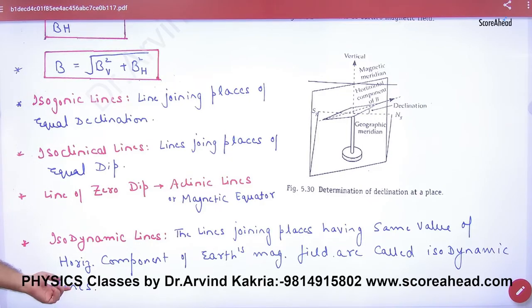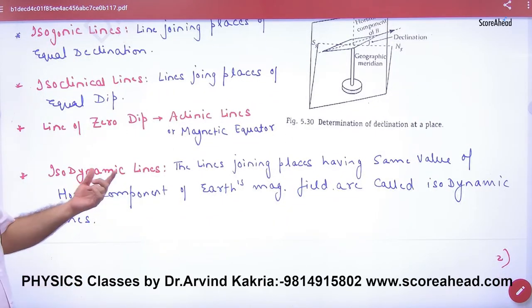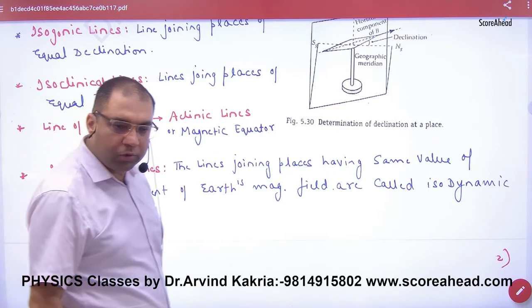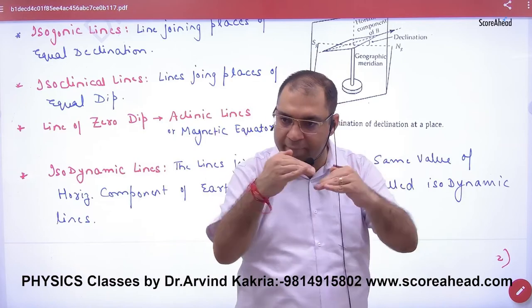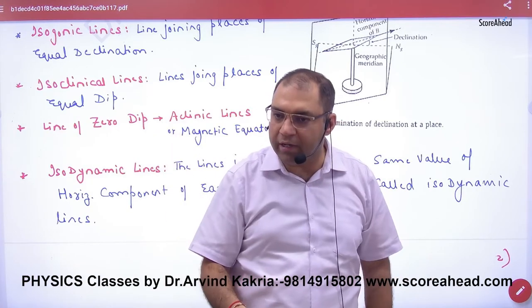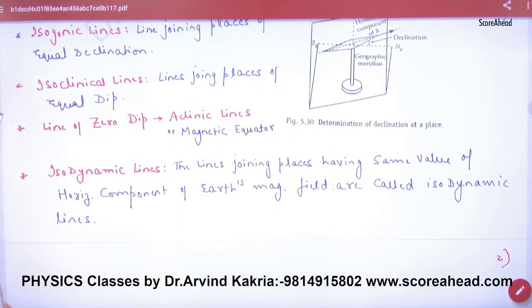Isodynamic lines: line joining places having same value of horizontal component. Wherever on Earth the horizontal component is the same, the lines joining those places are called isodynamic lines.